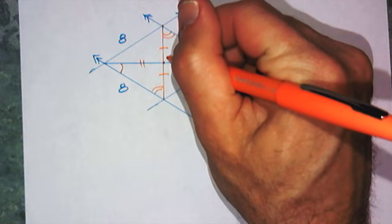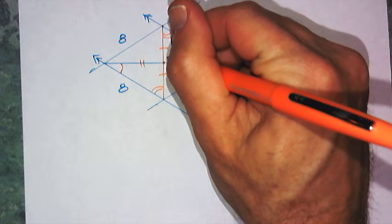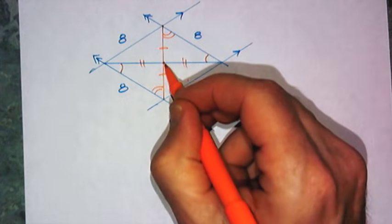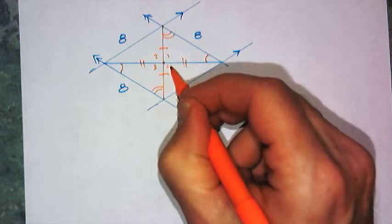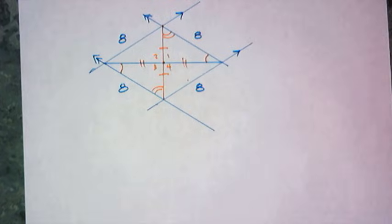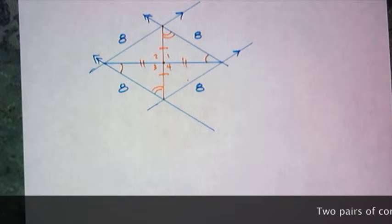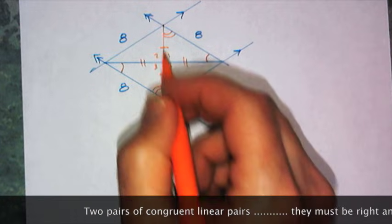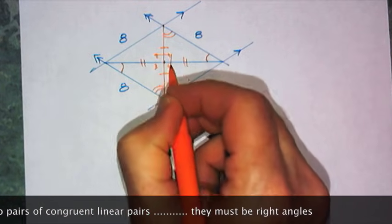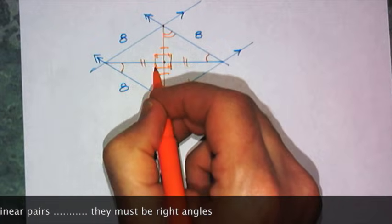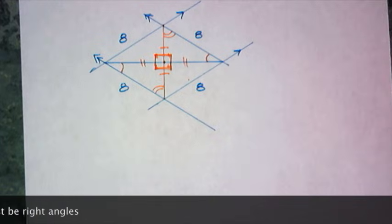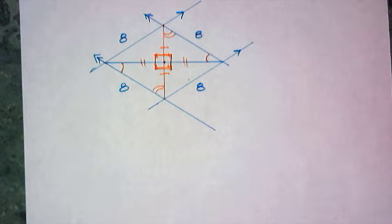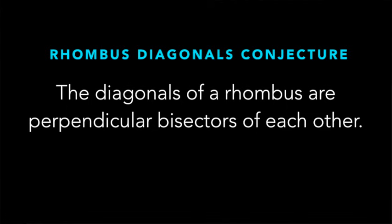In the middle I have four angles — one, two, three, and four — that are all congruent to each other, and they are all consecutive, adding up to 360 degrees. The only way to get that is for them each to be 90 degrees. This leads us to our second conjecture for the evening, the rhombus diagonals conjecture: the diagonals of a rhombus are perpendicular bisectors of each other.